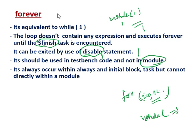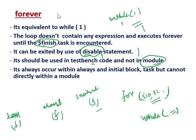The forever loop is used for testbench writing. It always occurs within an always block, an initial block, or a task, but cannot be used directly within a module. Inside a task we can write forever, inside always we can write forever, and inside an initial block we can also write forever. But not directly inside a module.